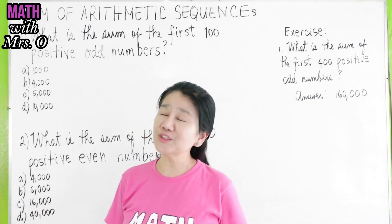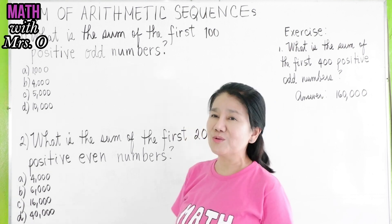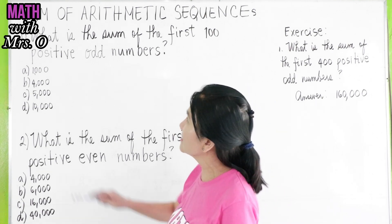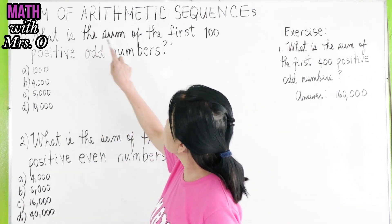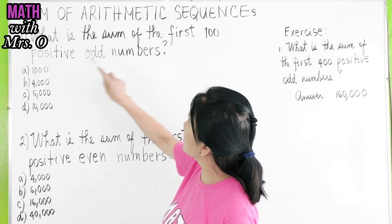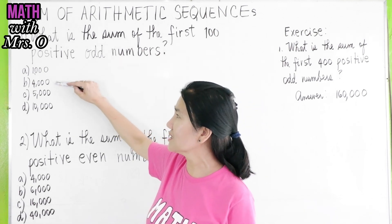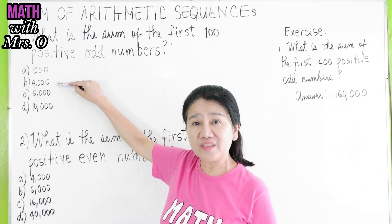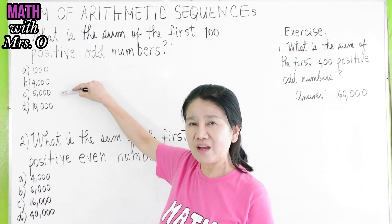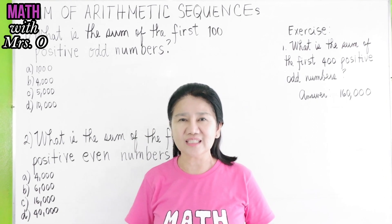Our lesson for today is sum of arithmetic sequences. The first problem is: what is the sum of the first 100 positive odd numbers? A: 1,000, B: 4,000, C: 5,000, or D: 10,000.